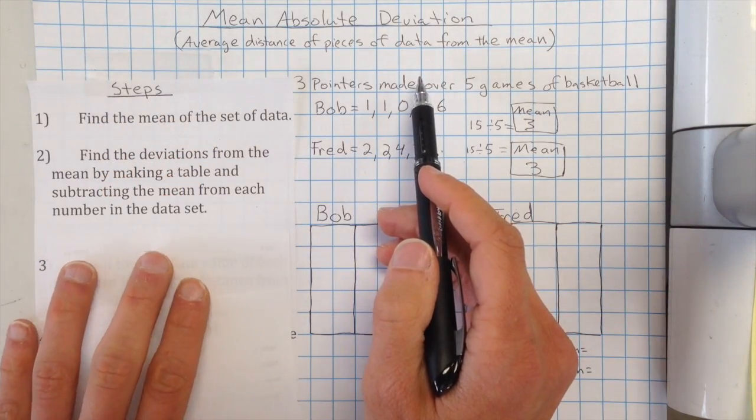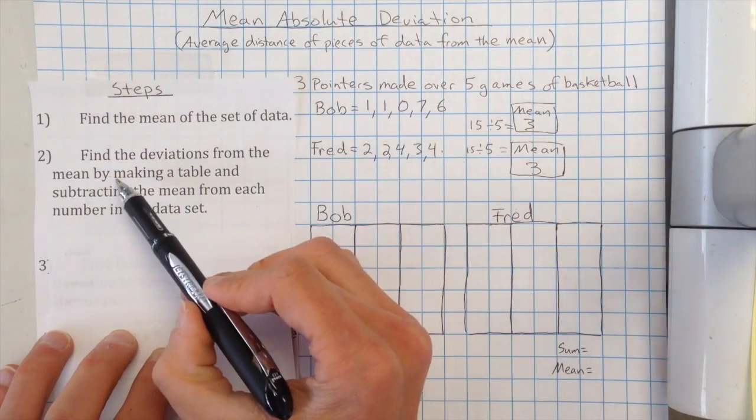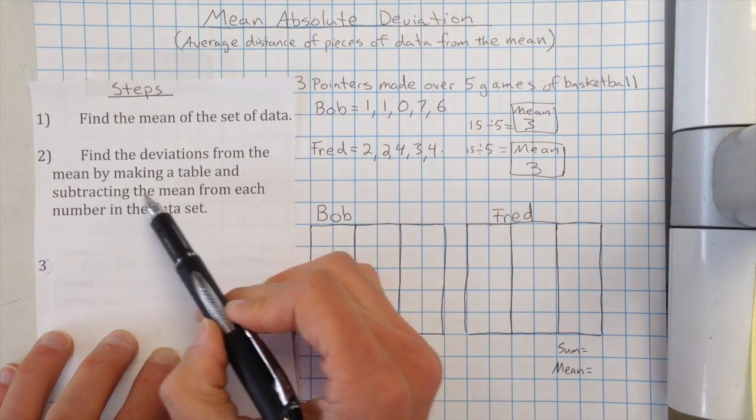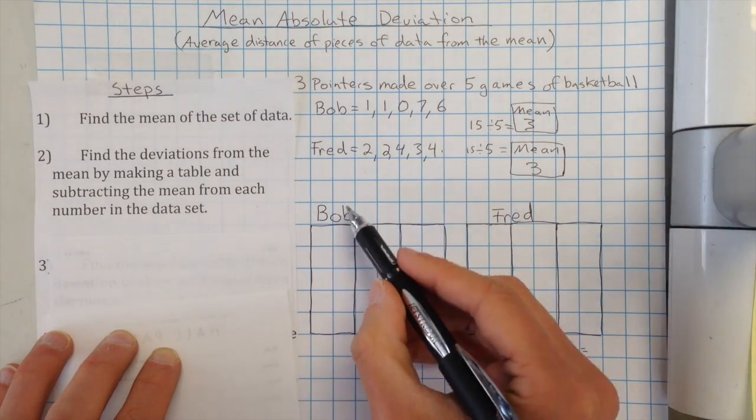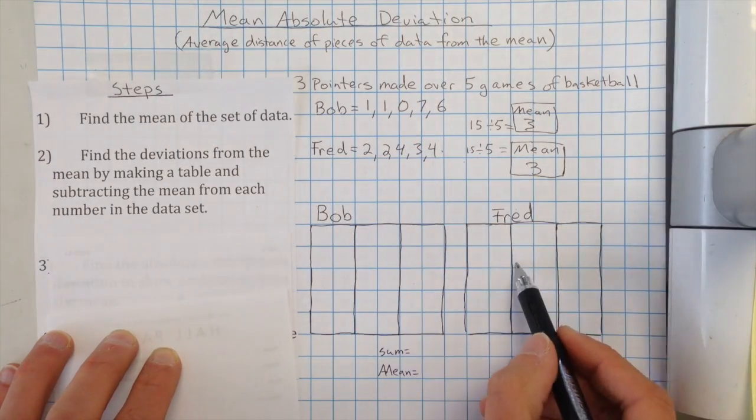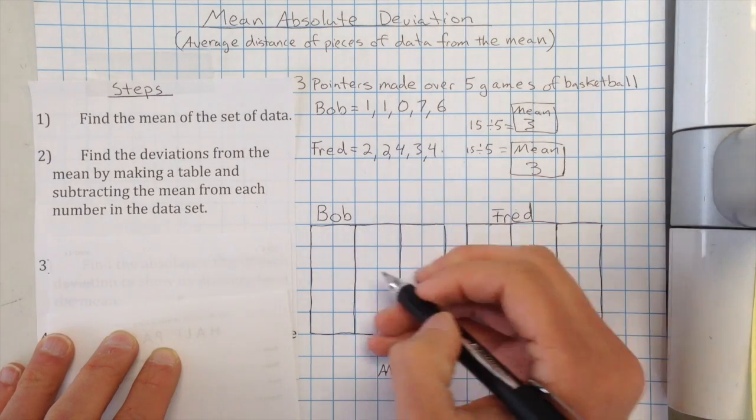So then your second step, find the deviations from the mean by making a table and subtracting the mean from each number in the data set. So that sounds like a lot, but really all that means is I'm going to make a table for Bob and Fred, and I've already made them. I'm just going to list the value of each one.